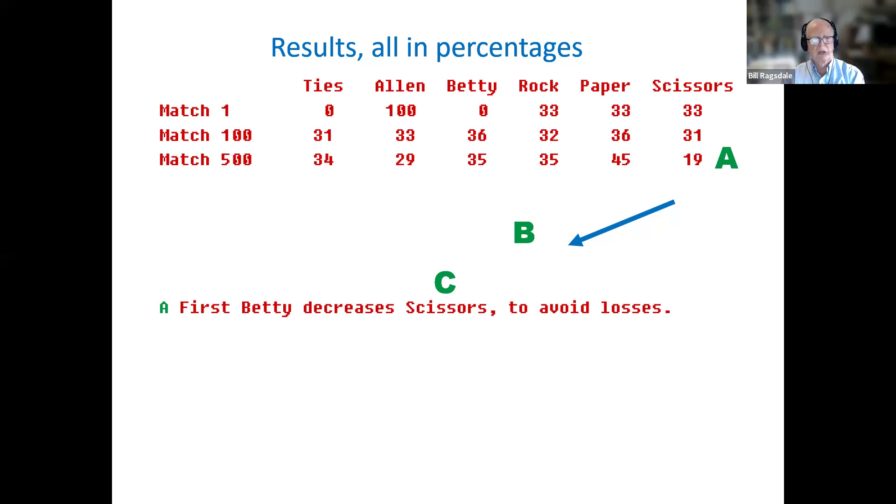At match number 500, this time, they have played a number of games, and there have been 34 ties. Alan has won 29 times, and Betty has won 35 times. Or these are percentages. So Alan has won 29% of the time. Betty has won 35% of the time. And we see that under the scissors column now, Betty has reduced her probability of playing scissors. It's only 19% of the time, and she has increased her paper play from 33% to 45%. So we see strategy being developed for her, play scissors less, and play paper more.